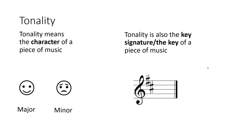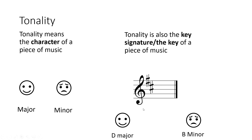I want you to imagine a key signature as being a person. Most people will have good days — so when you see two sharps and it sounds happy, we're going to call it D major; this person is having a good day. But we don't always have good days; sometimes we have bad days and negative feelings. When we have bad days, that would be B minor. Both these keys are related — they both use the same sharps — just like a key signature being one person having a good day (D major) or a bad day (B minor).